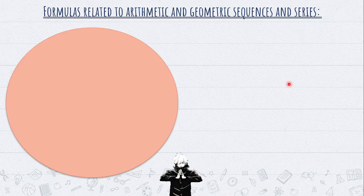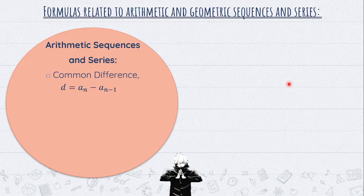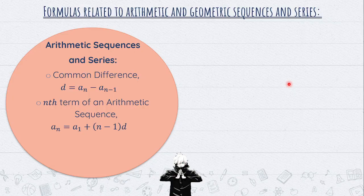Formulas related to arithmetic and geometric sequences and series. For the first set — arithmetic sequence and series — the first formula is for finding the common difference: d equals a sub n minus a sub n minus 1. The second formula, for the nth term of an arithmetic sequence, is a sub n equals a sub 1 plus n minus 1 times d. The formula for the arithmetic series is S of n equals n divided by 2 times the quantity 2 times a sub 1 plus n minus 1 times d.